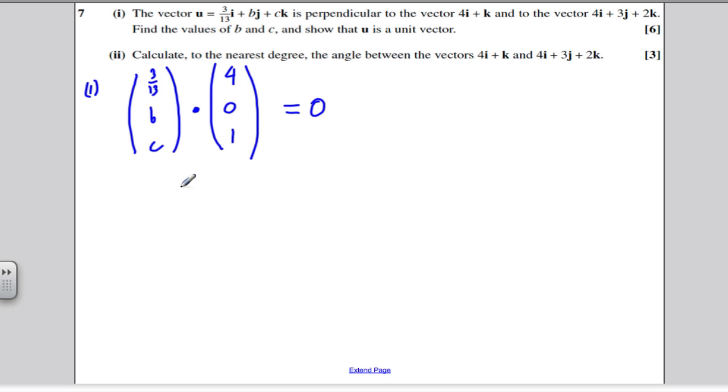3/13 times 4 is going to be 12/13. B times 0 is 0 and C times 1 is C. So I get that equation and it tells me that C must be minus 12 over 13. So I have found C straight away.